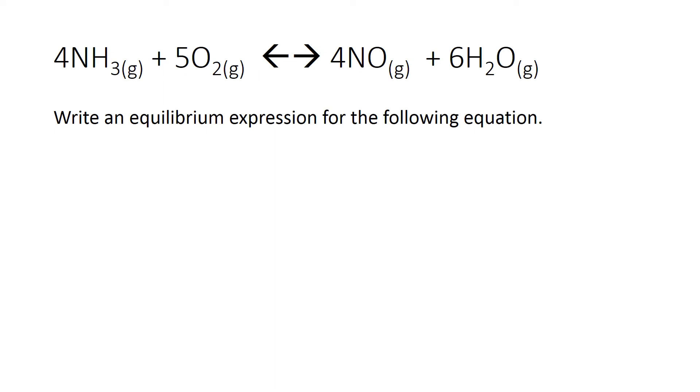We're going to take what we learned from the previous slide and apply it to an actual situation. For an equilibrium expression, it's going to be my concentration of my products divided by my concentration of my reactants. So let's start with our products. The concentration of NO will be to the fourth power because 4 is my coefficient, times the concentration of H2O, and that will be to the sixth power.